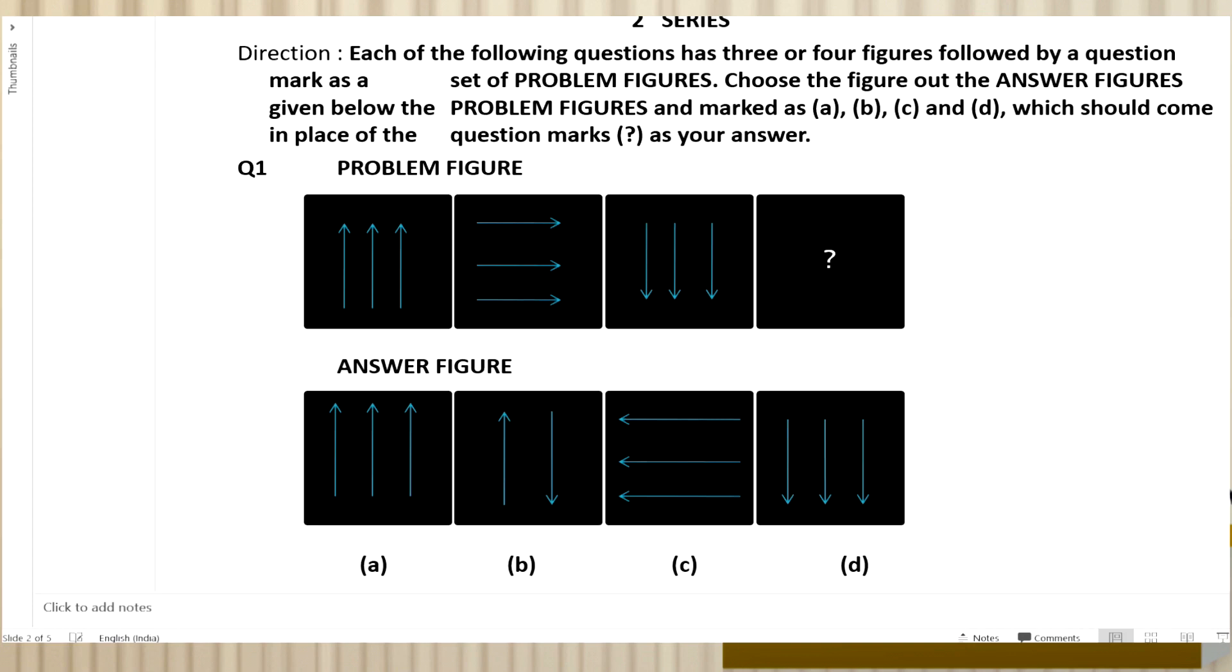Look, in the first figure you can see three arrows, and all three are pointing upward. In the second figure they become horizontal, the three lines are now lying down. Then again they stand vertically. So what should come in the fourth figure? The three arrows should be lying toward your left hand side. So your correct answer is C, very good.